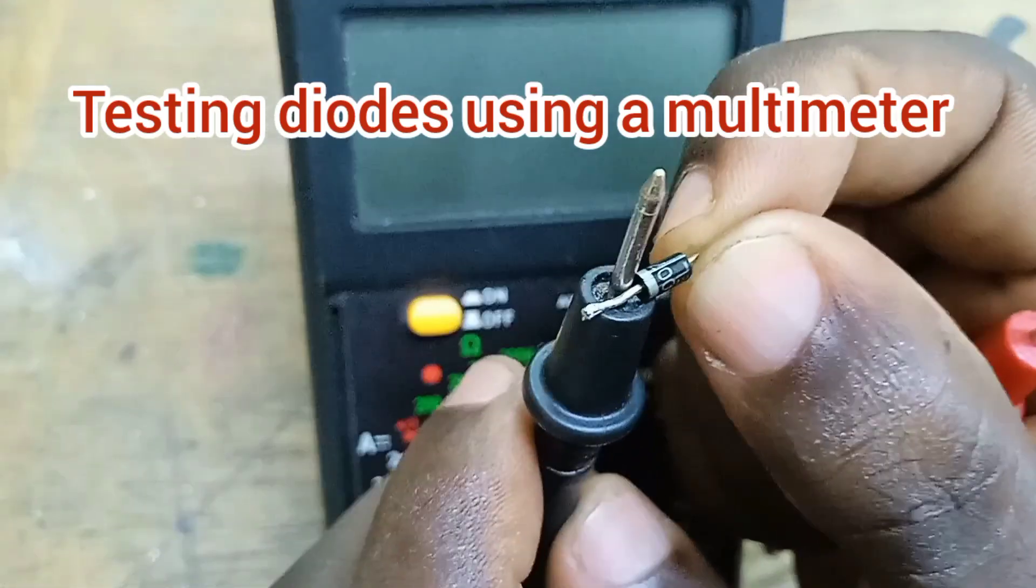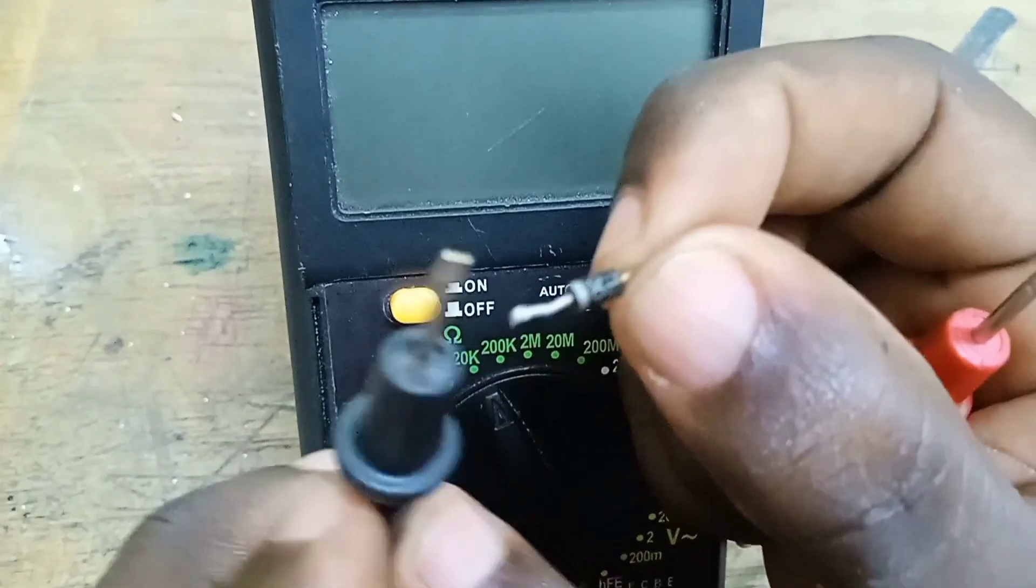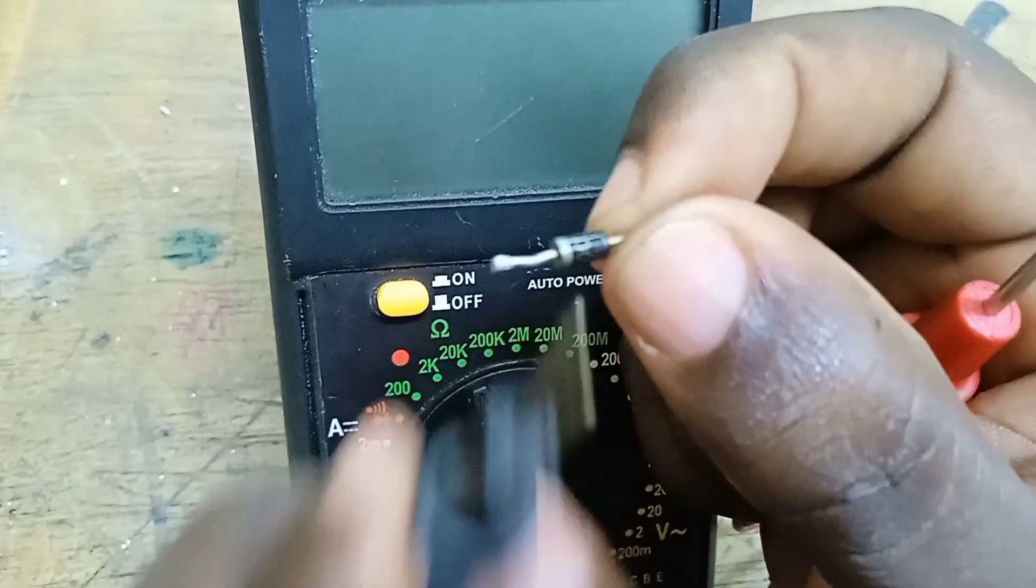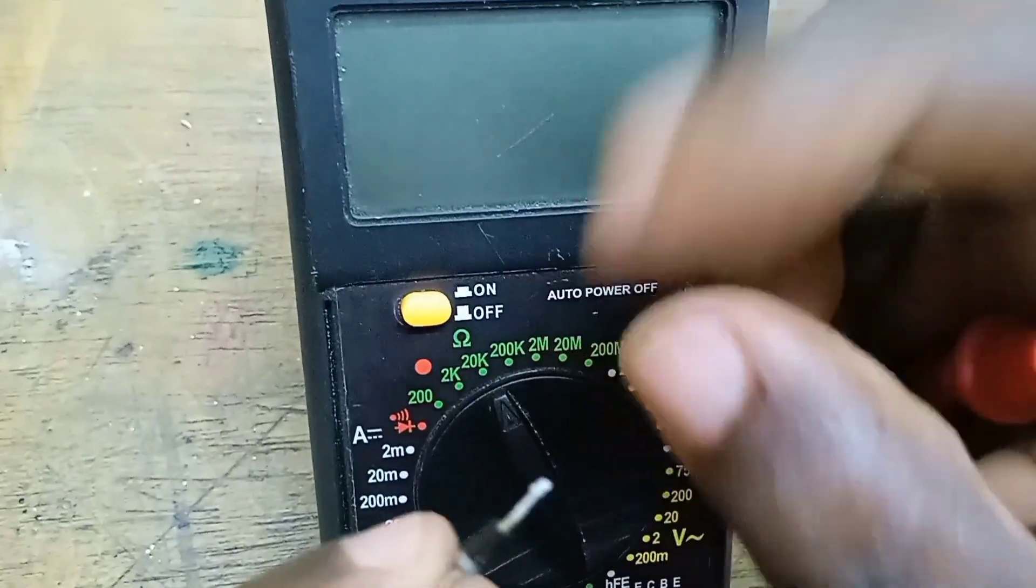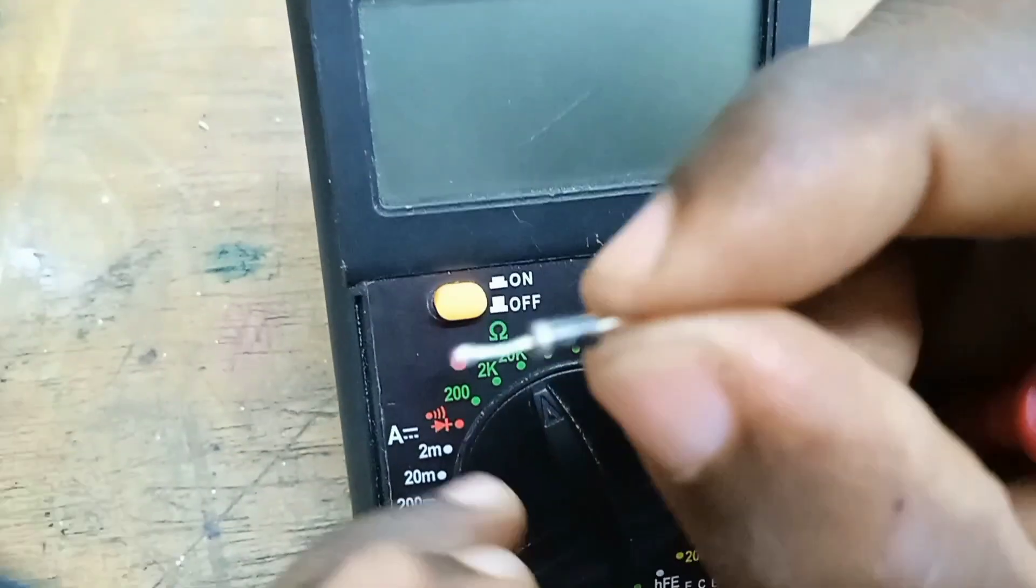This is a silicon diode. To check whether your silicon diode is okay or faulty using a multimeter, the first step is to identify the polarity of your diode.